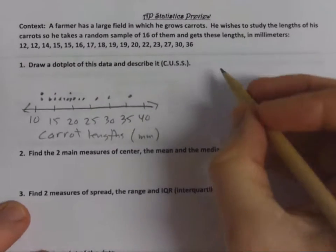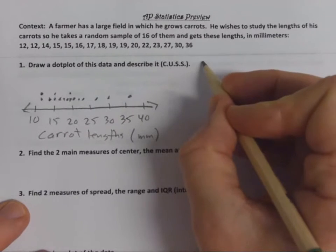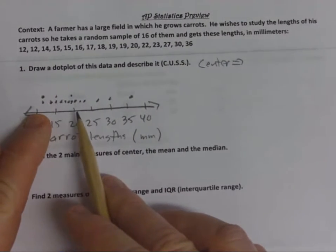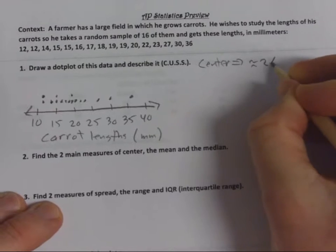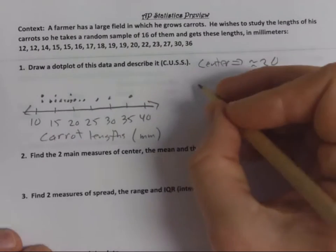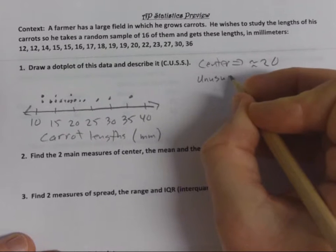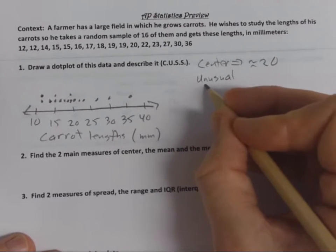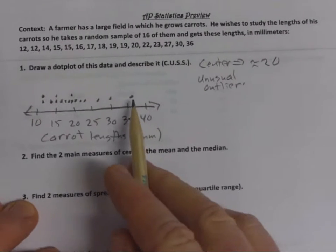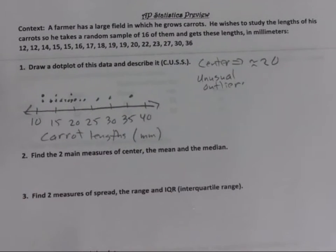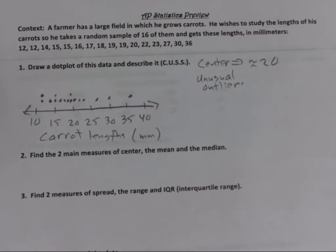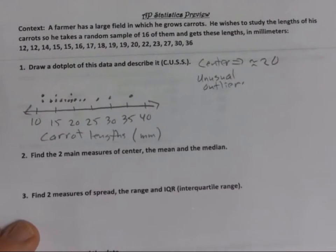Now we're going to describe it. The first thing in cussing is to state what you think the center is — just look basically in the middle. When you look in the middle of this data, the average is somewhere around 20. You would write sentences: 'The center appears to be around 20.' Then ask, are there unusual values, otherwise known as outliers? Outliers are points that are unusual relative to the other pattern. This 36 and this 30 might be outliers — sort of unusual. We'll have a formula for that later.